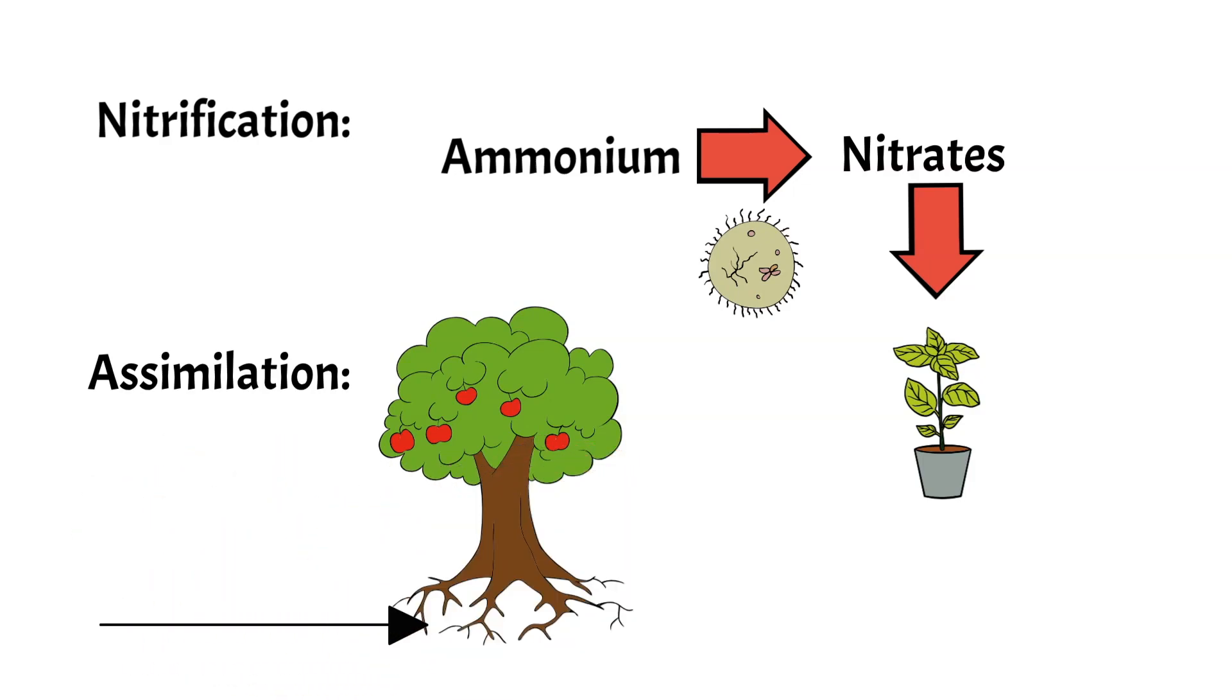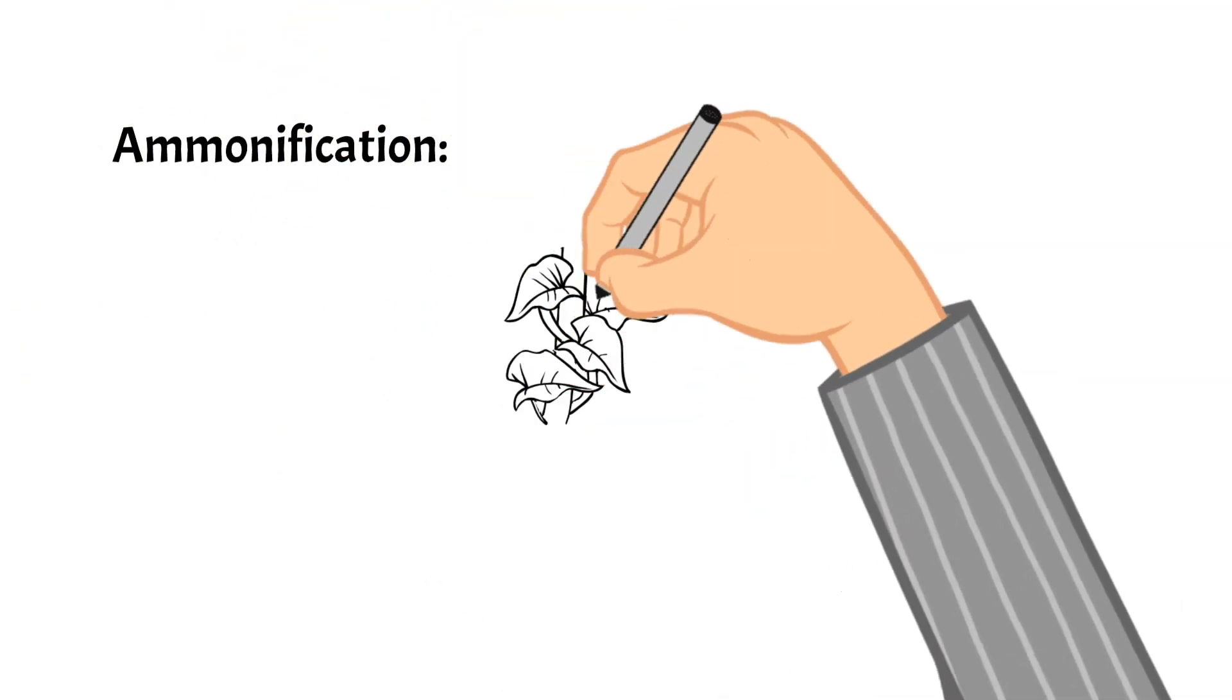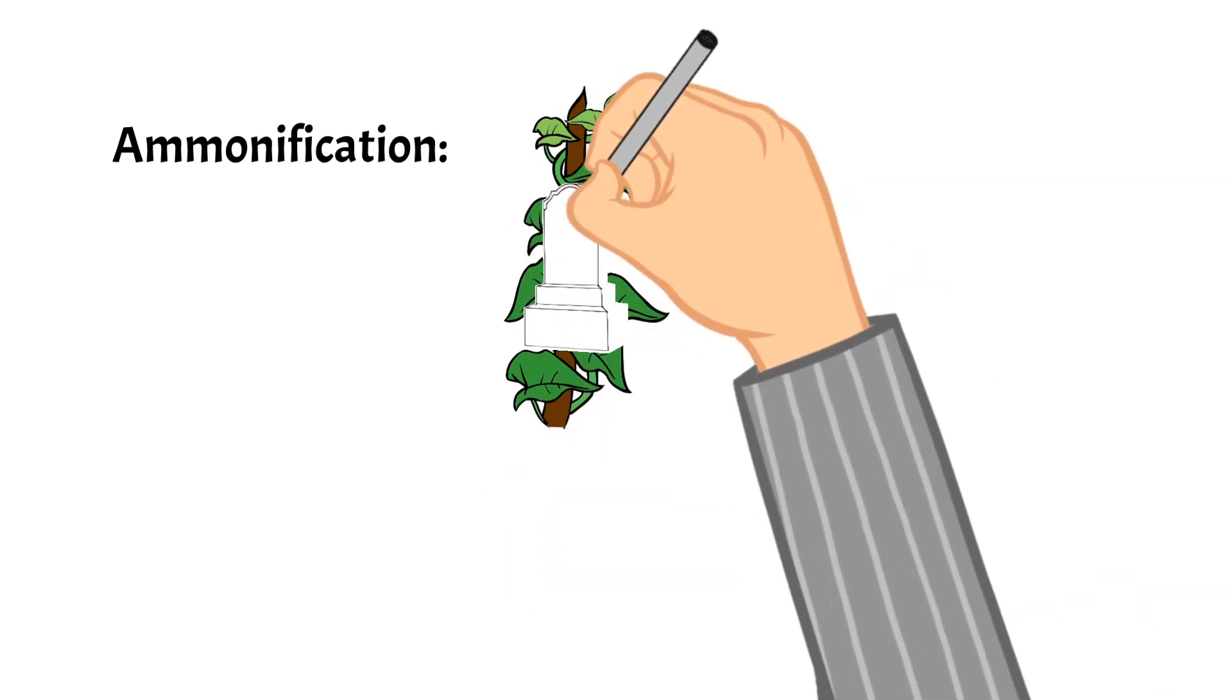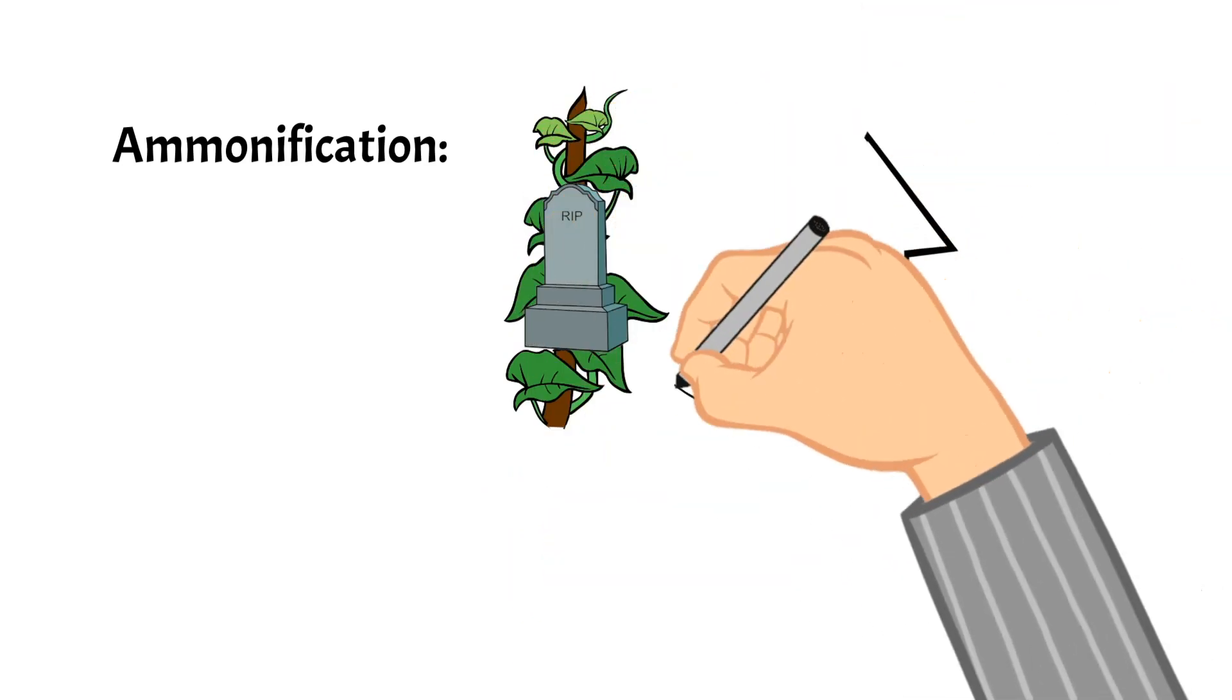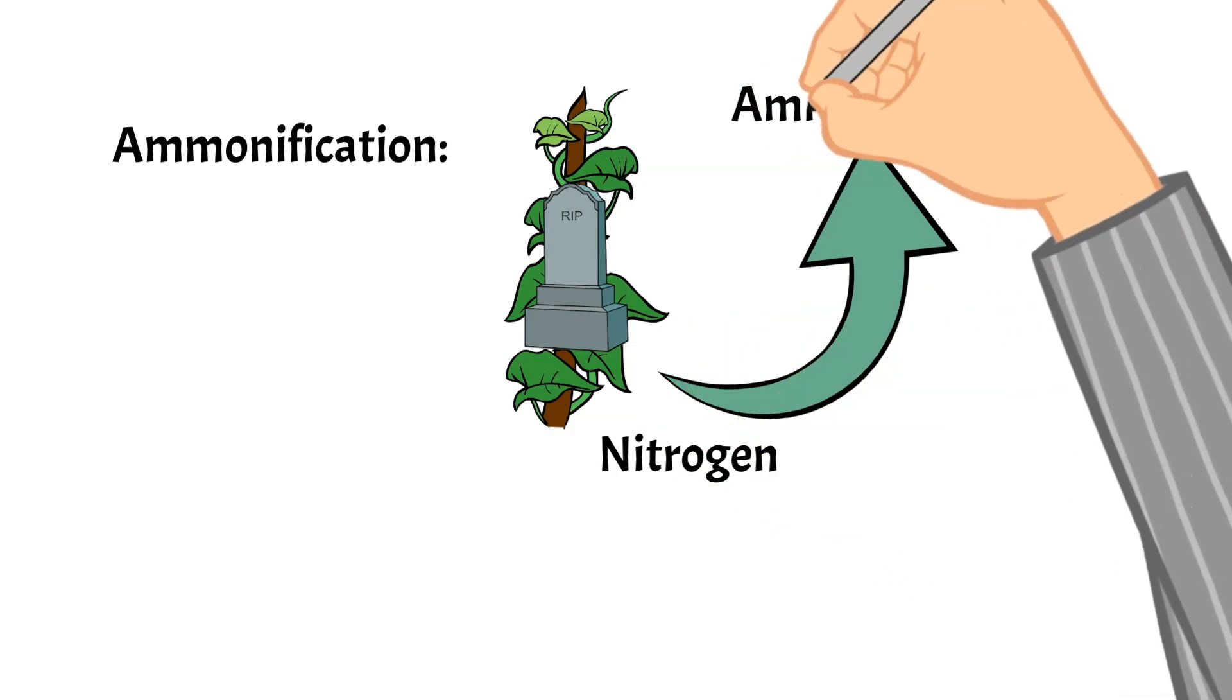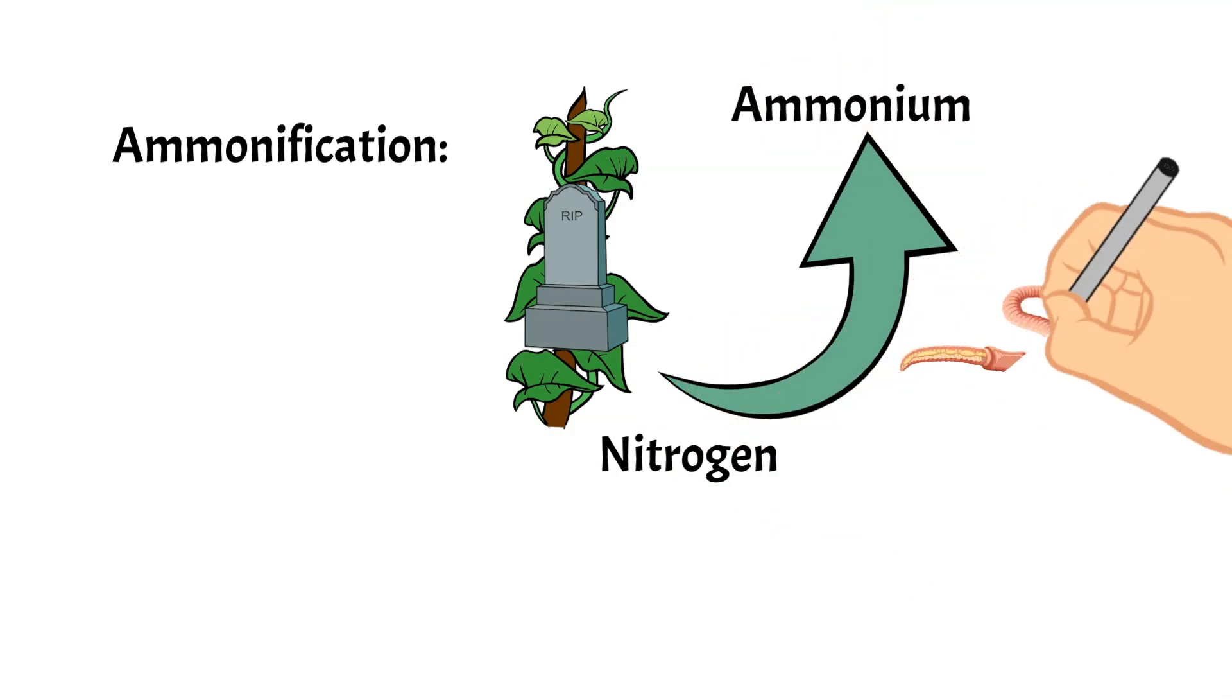And then ammonification and this is part of the decaying process. So when a plant or animal dies, decomposers, which we talked about last week, turn the nitrogen back into ammonium so it can re-enter the nitrogen cycle.